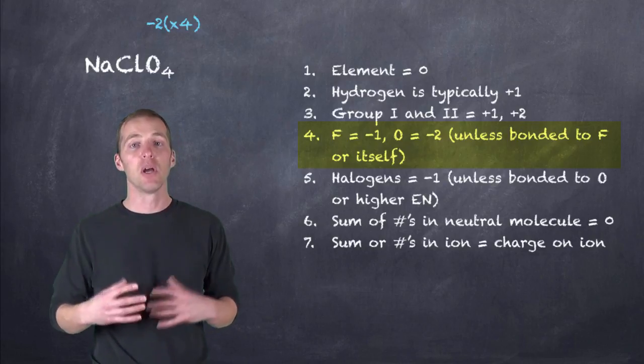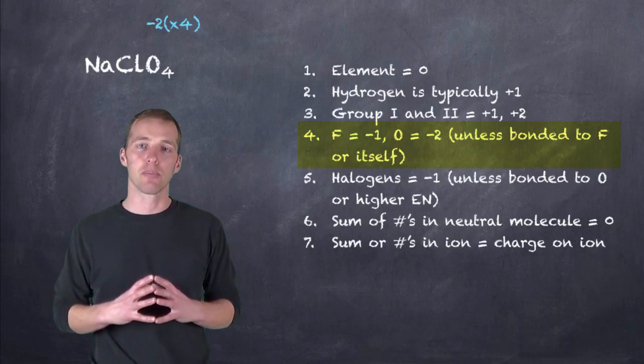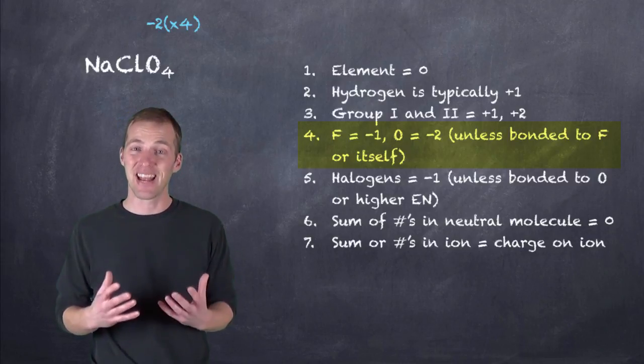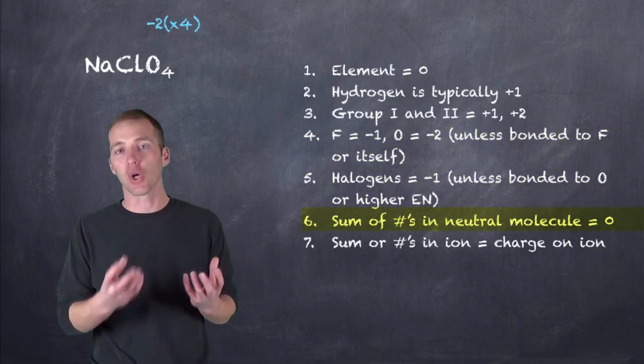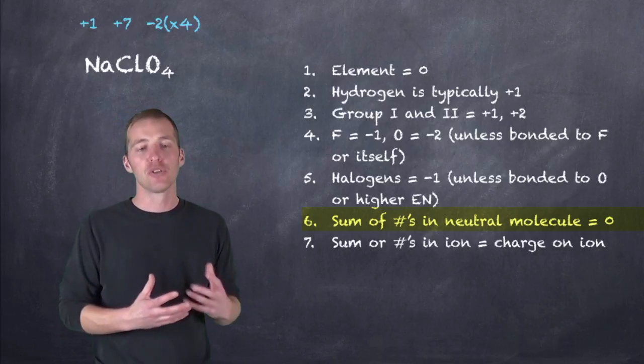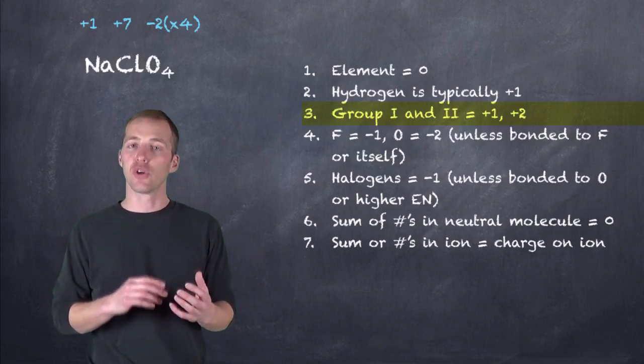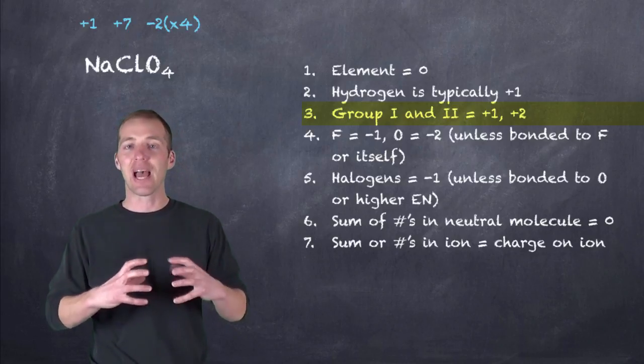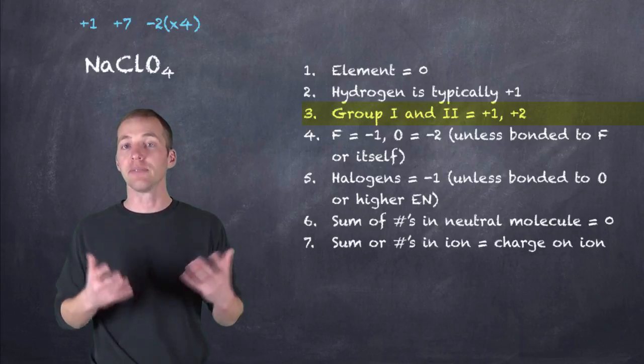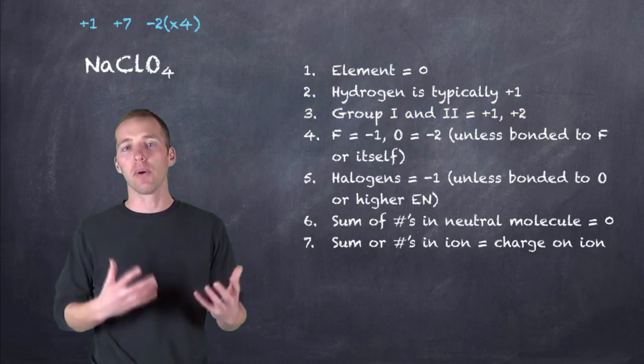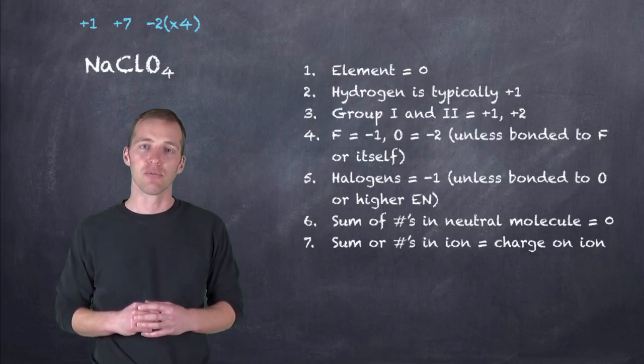Since there are four of them, we're going to have four oxygens, each with a minus two oxidation number. So the total oxidation number for all four oxygens is going to be minus eight, which means that, since this is neutral, the sum of sodium and chlorine have to be plus eight. So if we take a look at sodium being group one, we know that, according to our rules, sodium has to be plus one, which means that we have to have plus seven left over, so the oxidation number for chlorine is plus seven. And that's how we go about figuring out oxidation numbers for particular compounds using this set of rules.